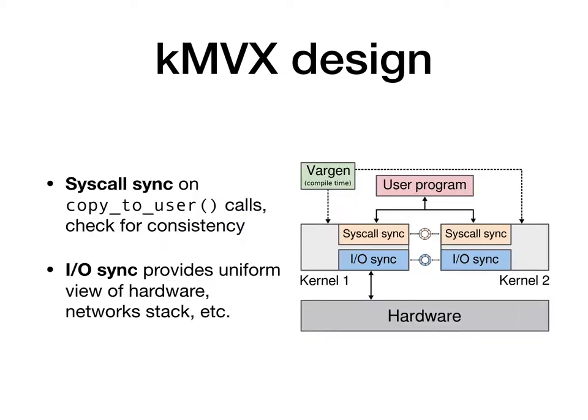Our design consists of three major components. The first component, the SyscSync, checks for consistency between the two kernels at the kernel-user space boundary. The second component, the IOSync, gives both kernels a uniform view of shared hardware resources and other stateful systems such as the network stack. In this scheme, the leader kernel communicates with hardware and replays the results to the follower kernel.